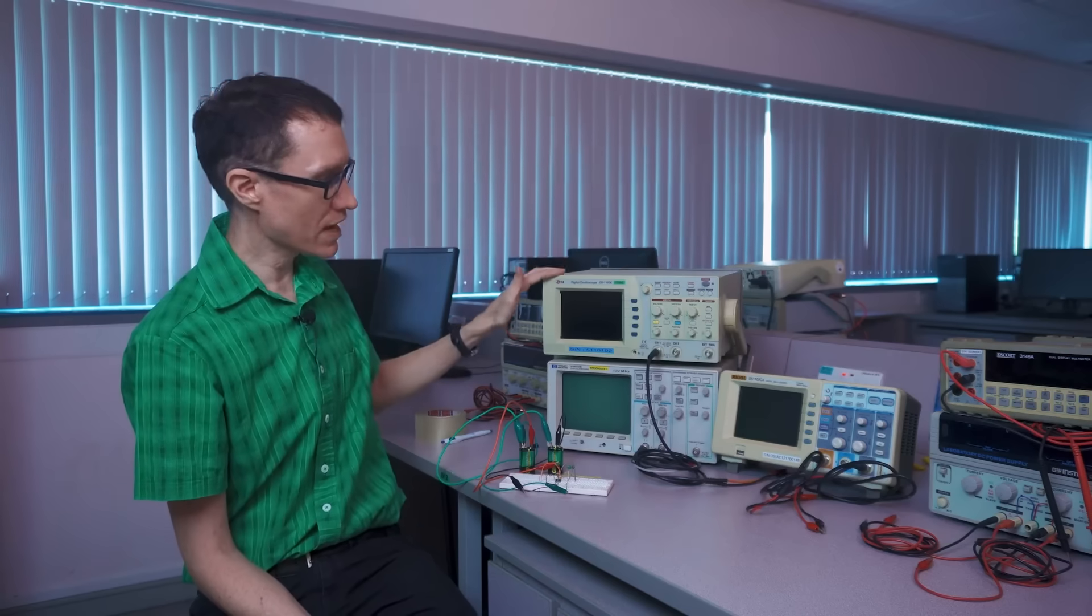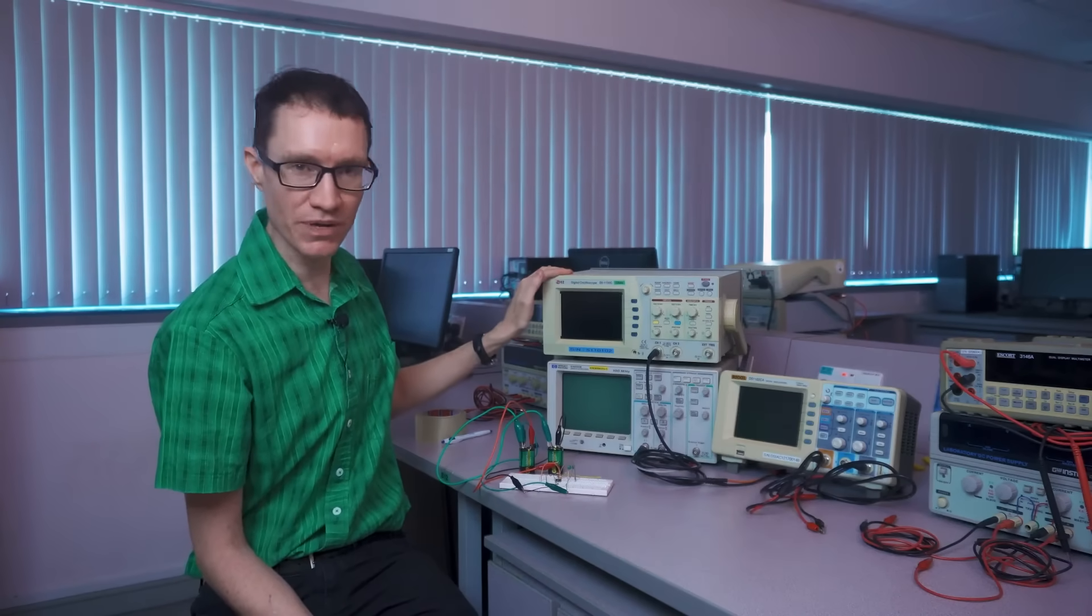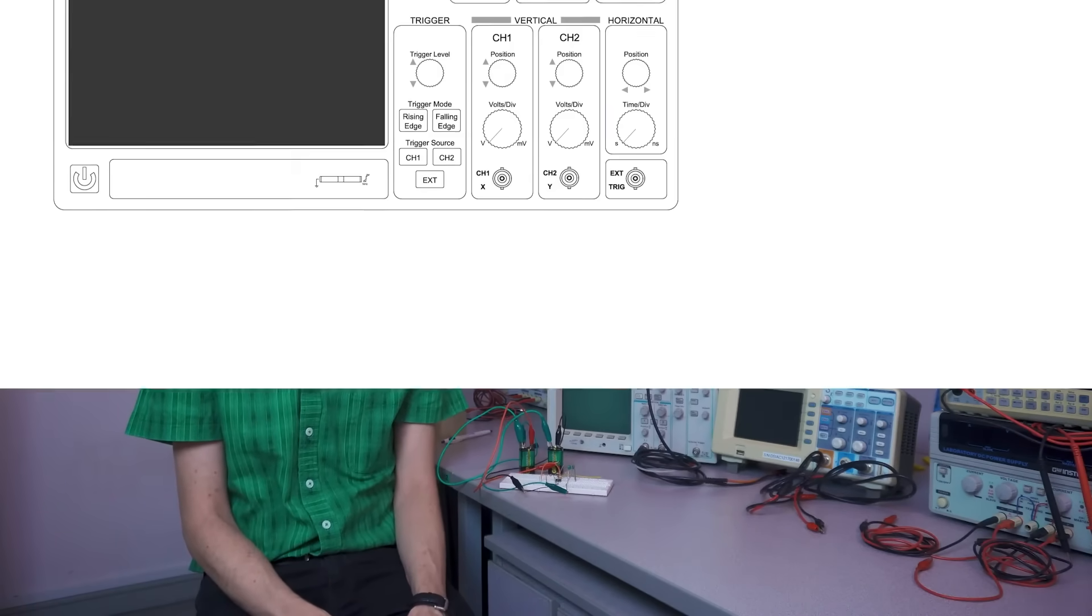We have a new digital oscilloscope here, we've got a slightly older oscilloscope here, and then we've got a very old oscilloscope down here. We're going to take some measurements of this circuit using all three of these oscilloscopes, but before we get started, let's first take a look at some of the features common to all oscilloscopes.